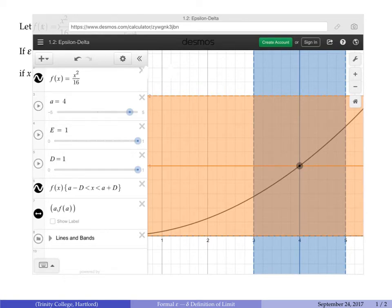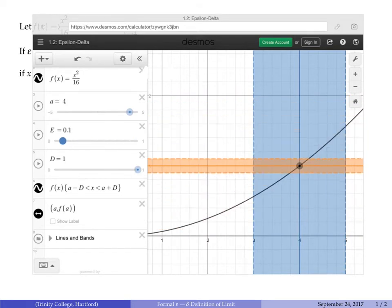For this problem we're given epsilon is 0.1, so we'll change the slider for epsilon down to 0.1. Remember what we're trying to do: we're trying to find the largest possible width of the blue band such that all points whose x values are in the blue band produce function values in the orange band.